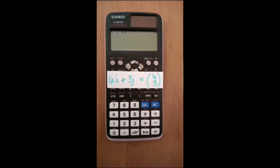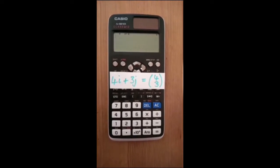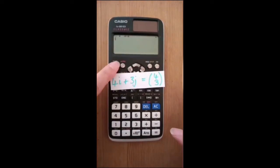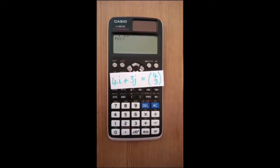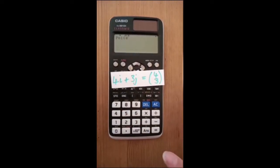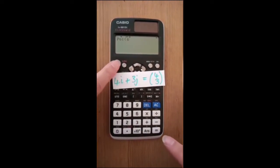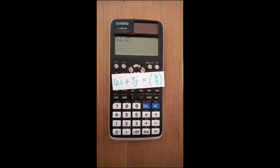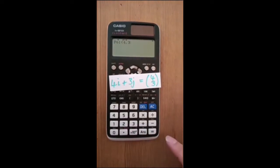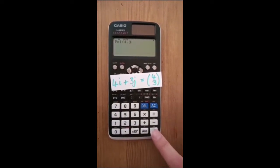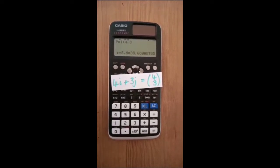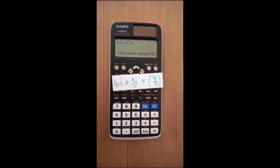Here's how to find the magnitude and direction of a vector using this Casio calculator. Press shift and plus to access pol. Input 4, the i coefficient, then press shift and close bracket. Input a comma, then input 3, the j coefficient, then press equals. The calculator tells you r equals 5, which is the magnitude of the vector.